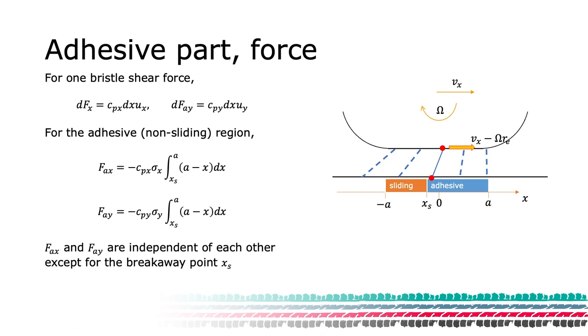To obtain the total force generated in the adhesive part of the tire, we can sum the shear stress for the two directions. We formulate two integrals and integrate from the breakaway point XS to the leading edge of the contact in X equal A. We see that these integrals and consequently the force in the adhesive part are independent of each other.